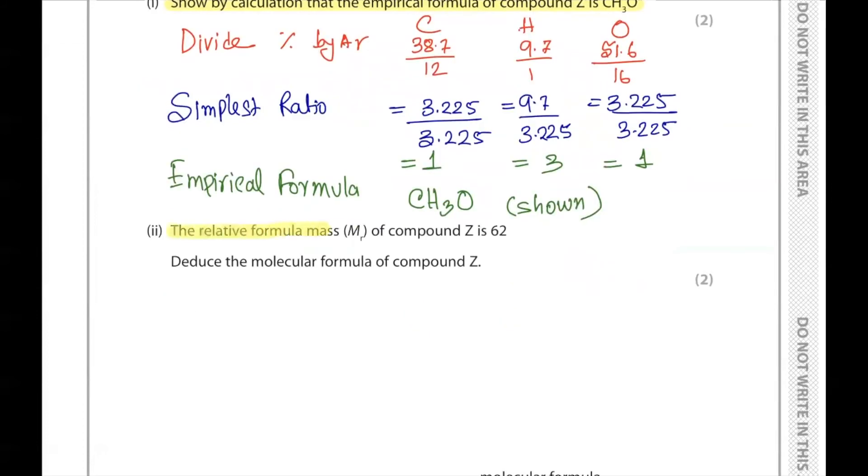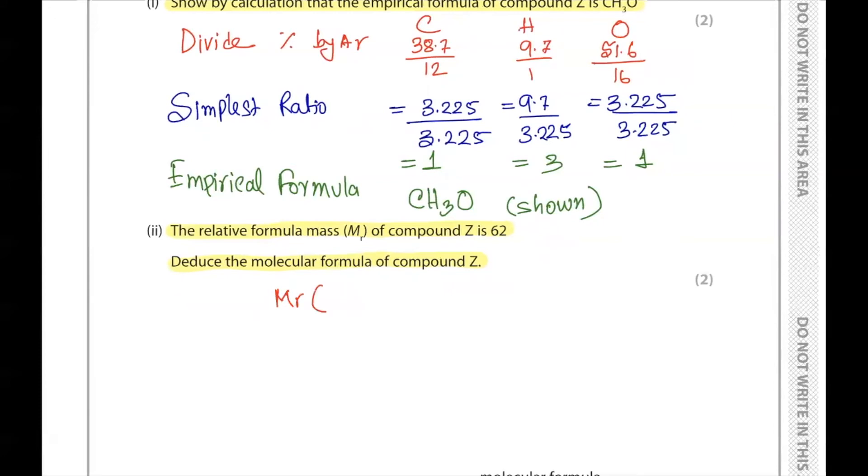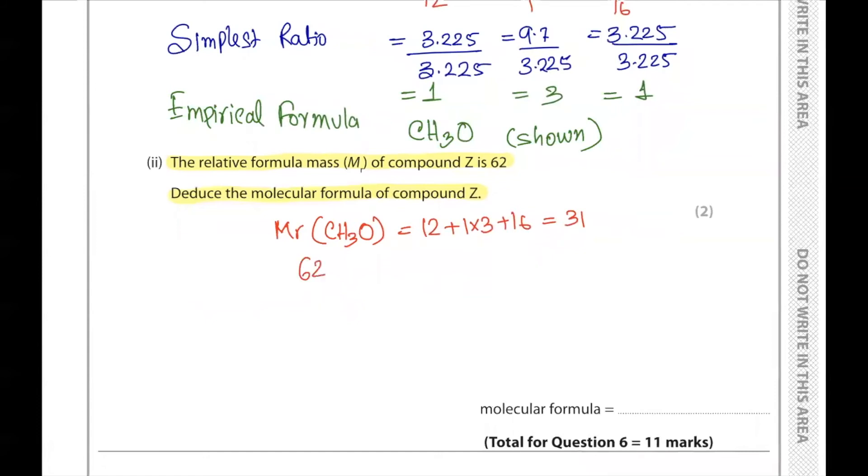Part 2. The relative formula mass MR of compound Z is 62. Deduce the molecular formula of compound Z. First we'll find the MR of the empirical formula CH3O, which is equal to 31. Then we'll divide 62 by 31 and we'll get 2. To find the molecular formula, we write molecular formula equals CH3O multiplied by 2, which is C2H6O2.